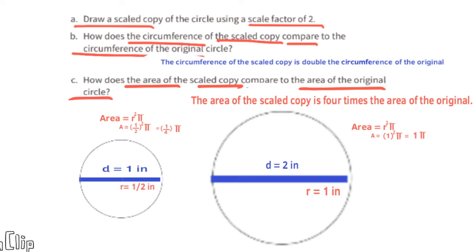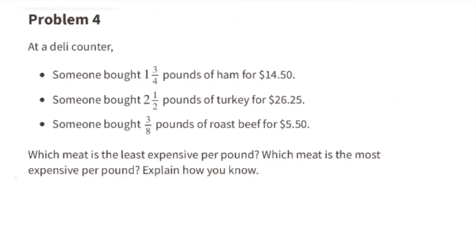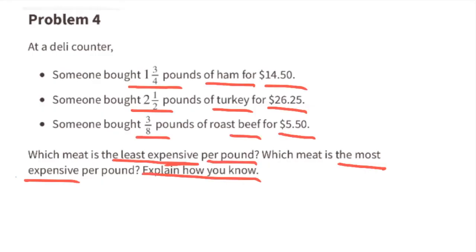Problem number four: at a deli counter, someone bought one and three-fourths pounds of ham for fourteen dollars and fifty cents; someone bought two and a half pounds of turkey for twenty-six dollars and twenty-five cents; someone bought three-eighths pounds of roast beef for five dollars and fifty cents. Which meat is the least expensive per pound, and which is the most expensive per pound?